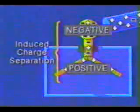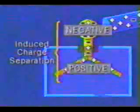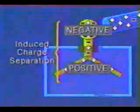If we look at the electroscope as a whole, we find that the top is negatively charged and the bottom is positively charged. Since no charge has been transferred, the electroscope as a whole is still neutral. It has, however, experienced induced charge separation.